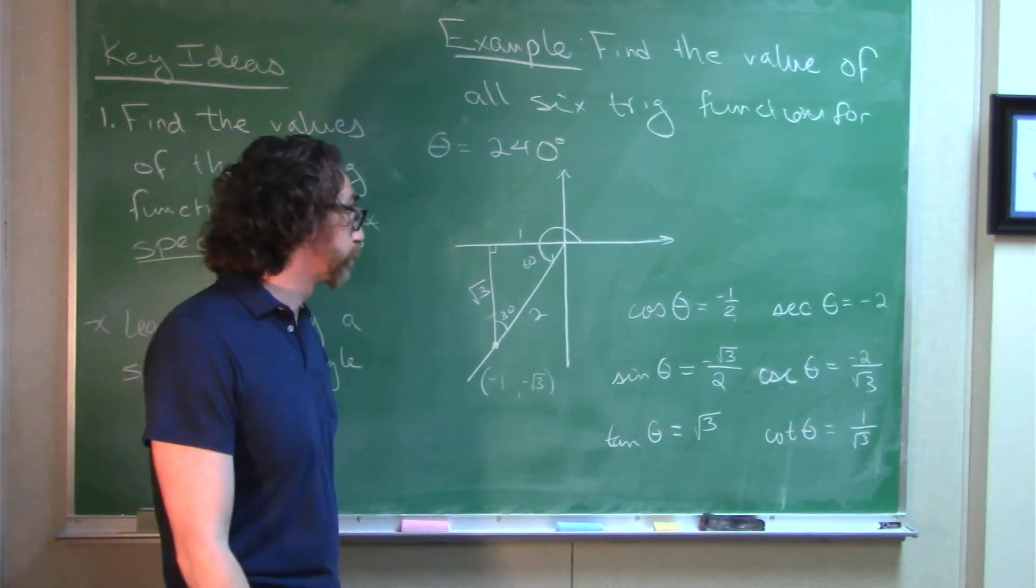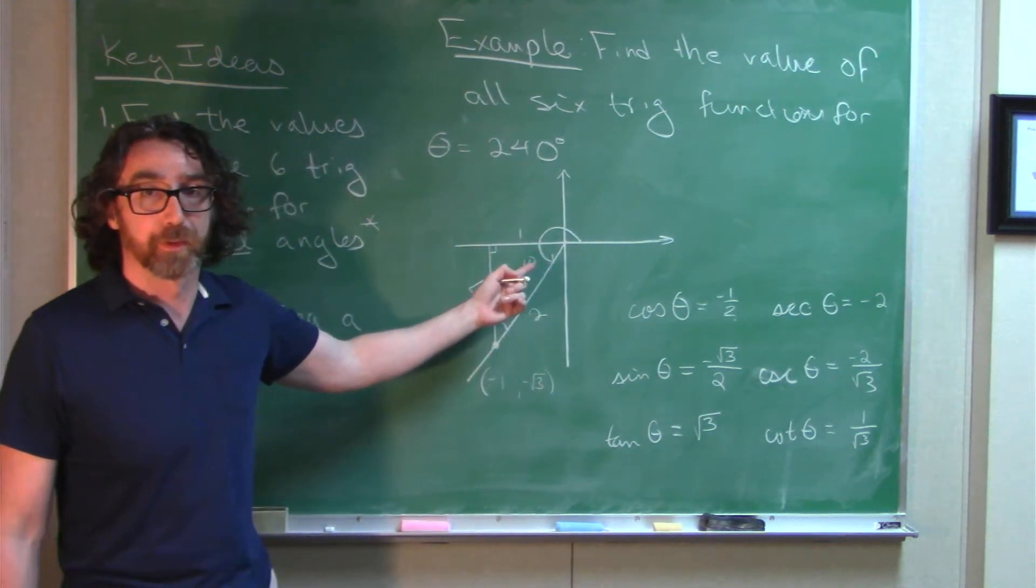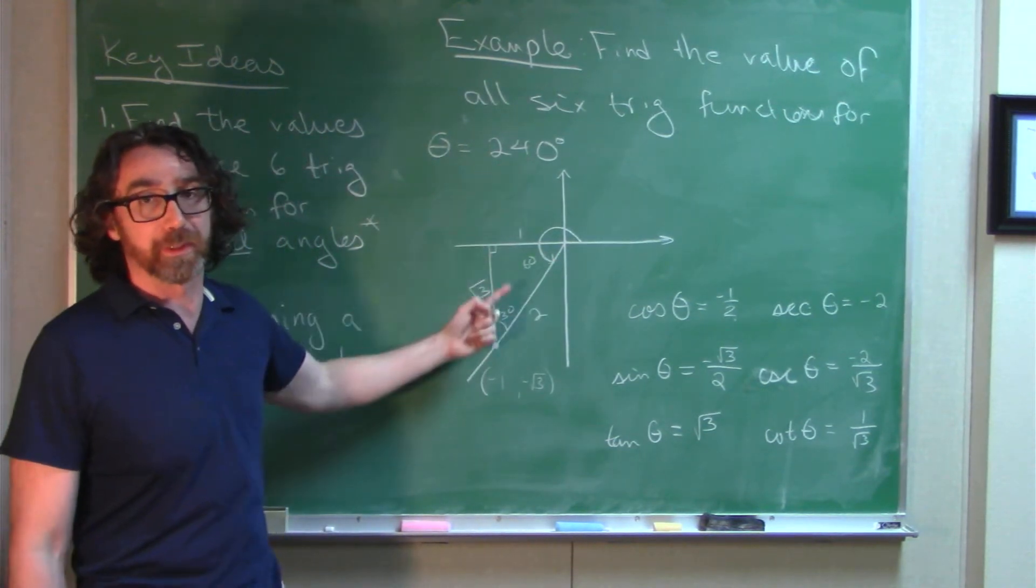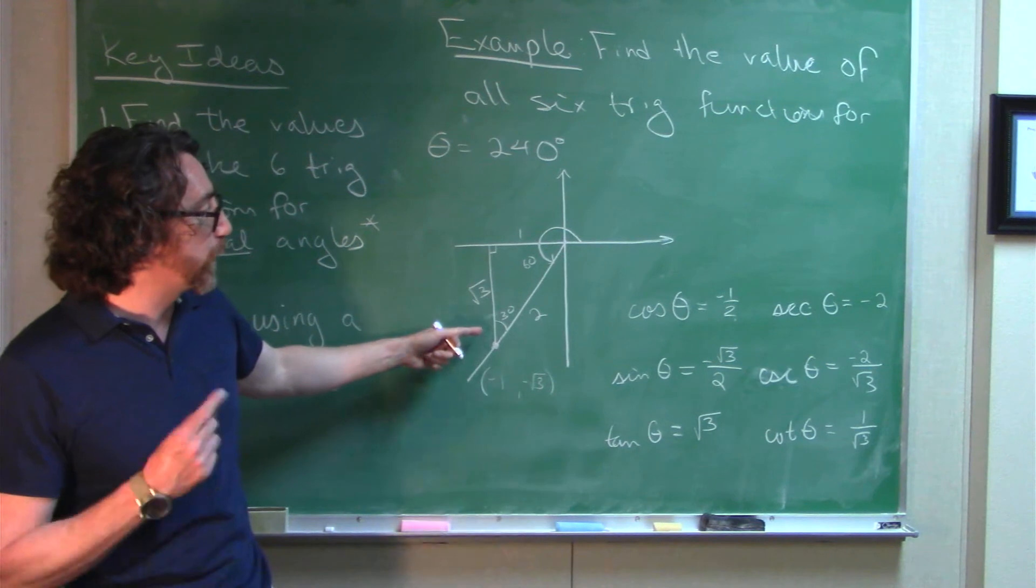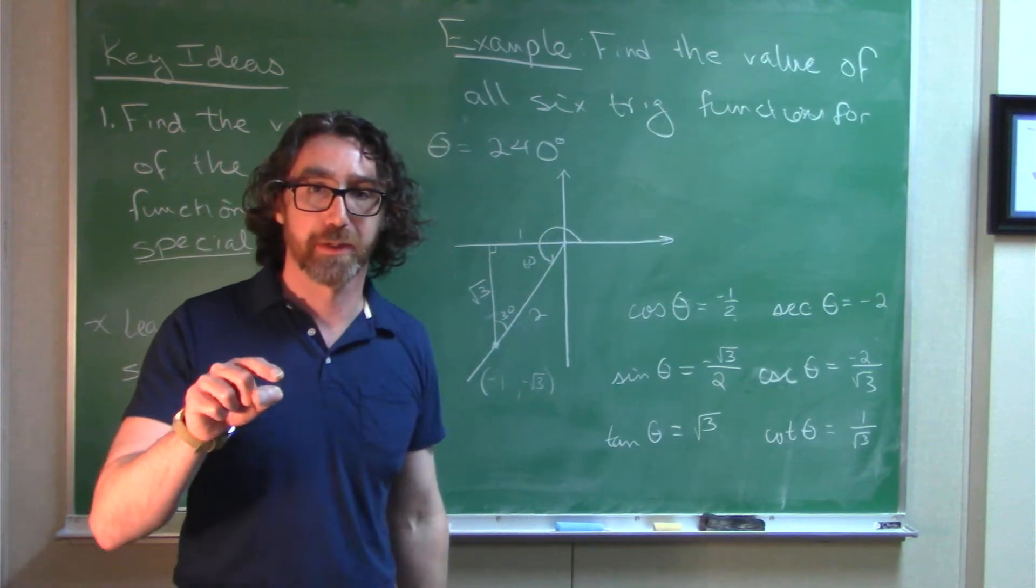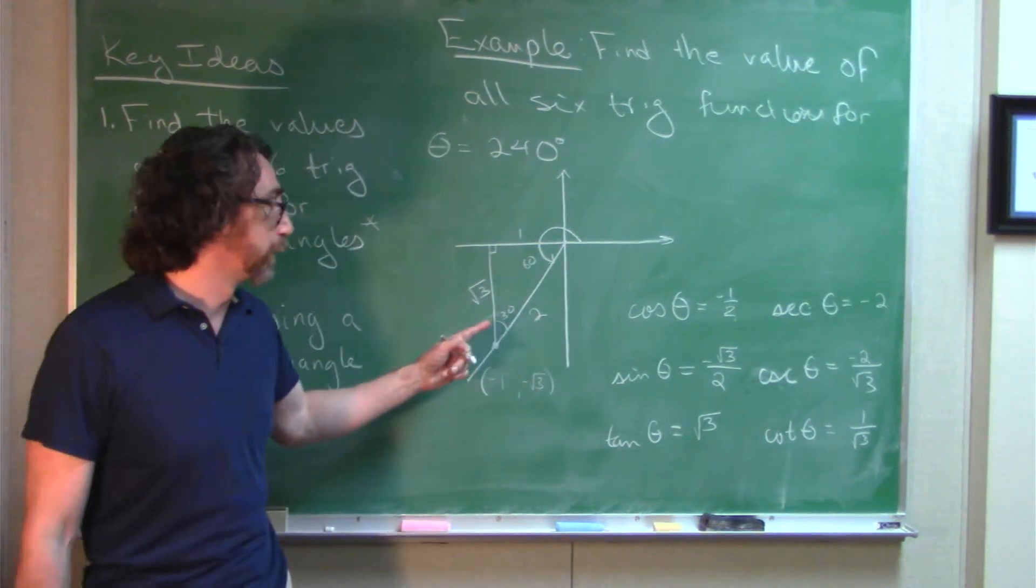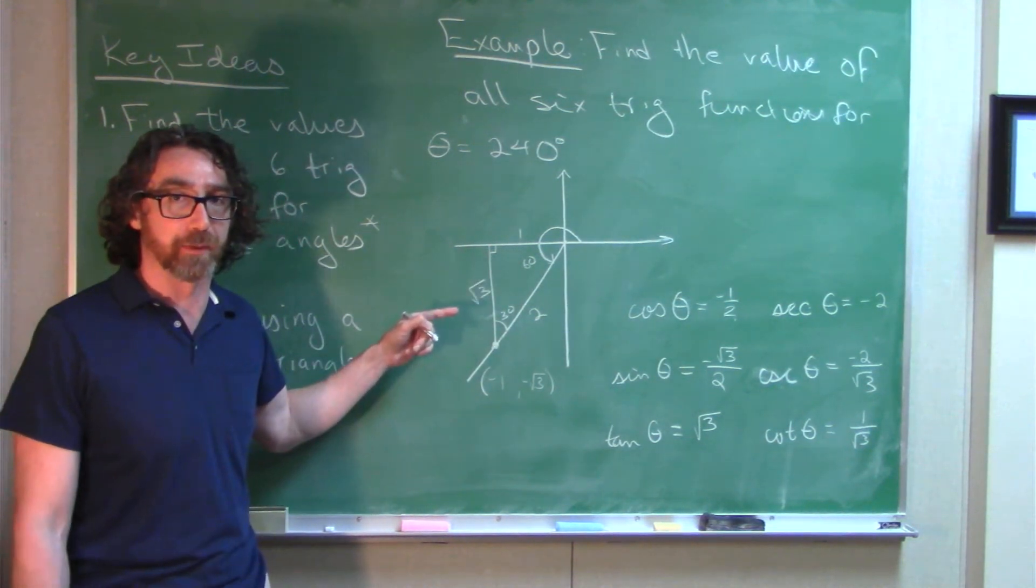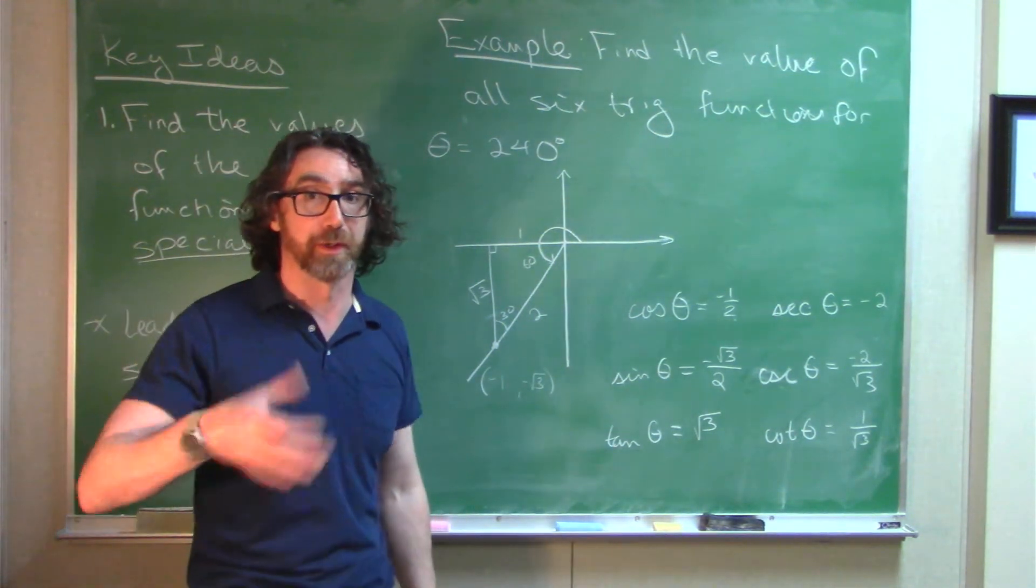In this scenario, we were given the angle. We draw that angle in standard position. If they're asking me to find the trig ratios for an angle, it's probably going to be something that leads to a special triangle in the picture like this. Now, when you're making your special triangle, always go to the closest part of the x-axis. Don't go to the y-axis. You want to go to the closest part of the x-axis to draw in your special triangle.